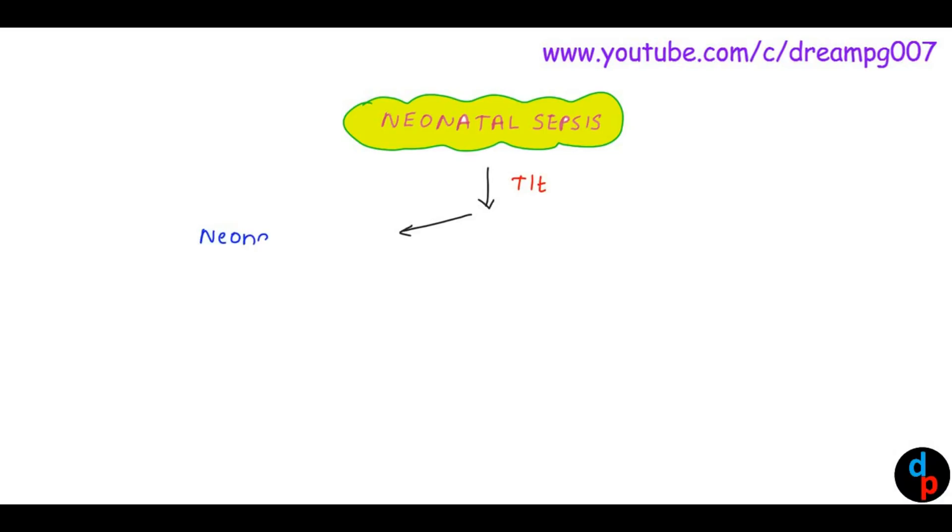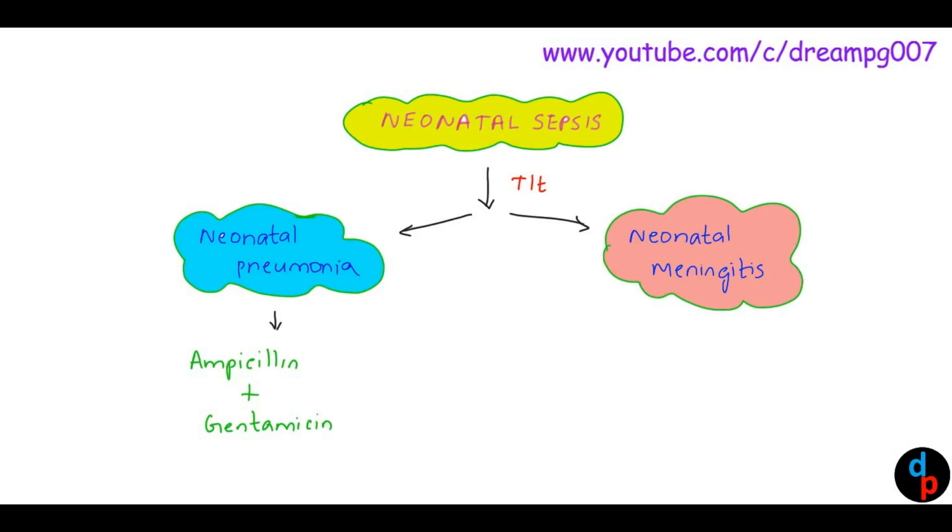Now let's have a look into the Treatment options of Neonatal Sepsis. For Neonatal Pneumonia, we have to treat with Ampicillin and Gentamicin. Whereas for Neonatal Meningitis, we have to treat with Ampicillin, Gentamicin and Chloramphenicol. Or we have to use Ampicillin plus a 3rd generation Cephalosporin, Cefotaxime for example.